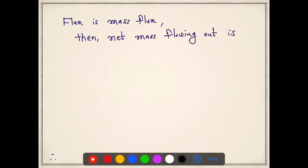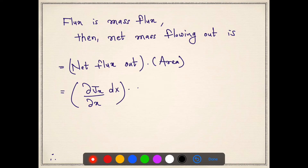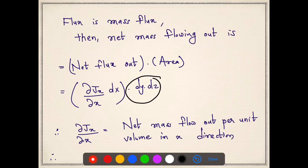Let us take a physical example where the flux we considered is a mass flux — that is, mass flow rate per unit area. The net mass flowing out of that infinitesimally small volume is the net flux going out multiplied by its area. The net flux out is ∂jx/∂x · dx, and this is multiplied by the area dy·dz. Since dx·dy·dz is the small volume, ∂jx/∂x is the net mass flow rate per unit volume in the x direction.